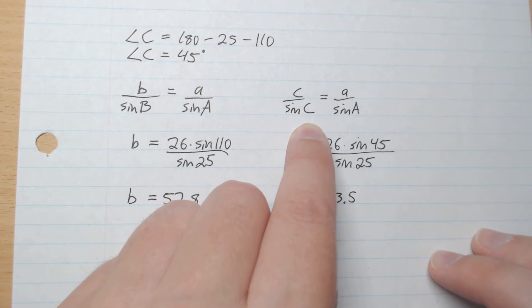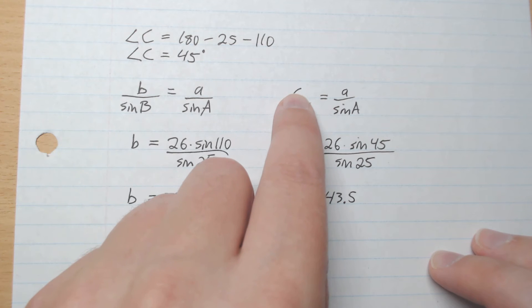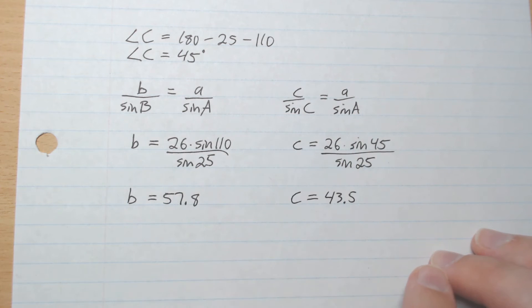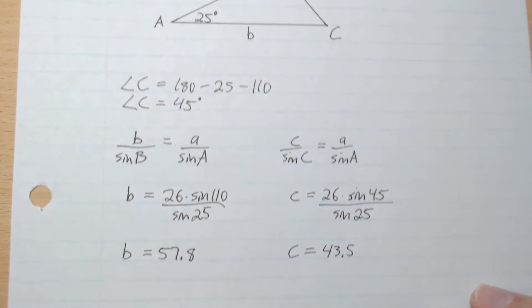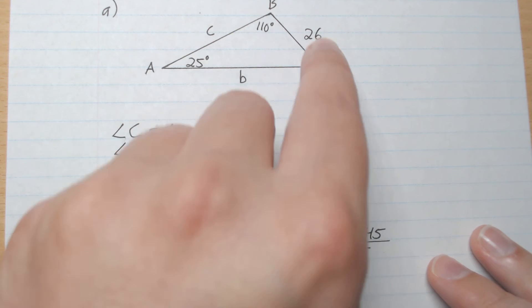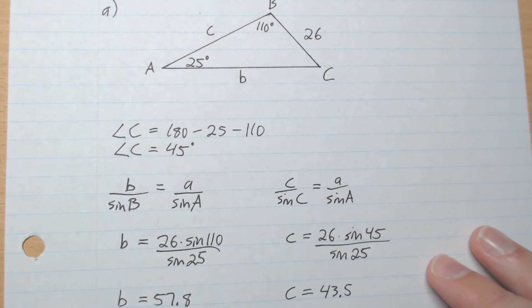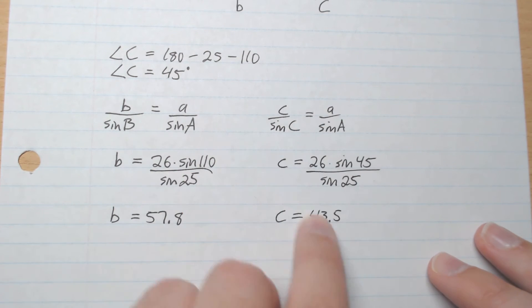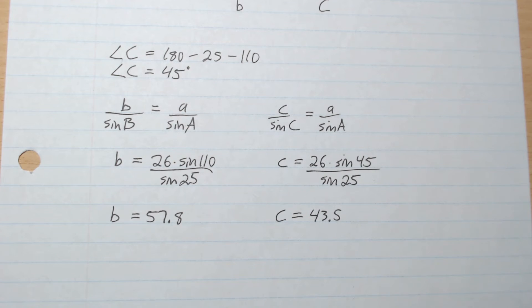Same thing here. We have angle C from here but not side c. So we're going to multiply side c to both sides. So we have c equals a times sine C over sine A. Sine 25 and a is 26. Punch that in your calculator and side c is 43.5.